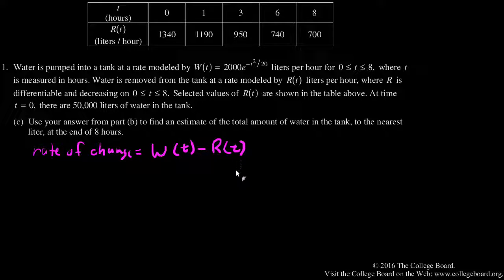And so that lets me know that the volume of water at time 8 will equal the integral from 0 to 8 of this rate of change, W(t) minus R(t), with respect to time, plus whatever the starting volume of water in the tank is. And that's given to us, that's 50,000 liters.